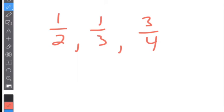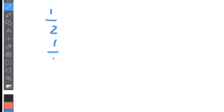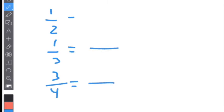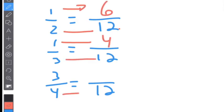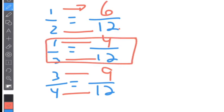So one half, one third, and three fourths — I like to write them vertical like this. We said the denominator is going to be 12. Remember, whatever you do to the denominator, you must do to the numerator. So times six, times six; times four, times four; times three, times three. All you need to do now is order them by the numerators. The smallest is going to be one third, the middle one is one half, and three fourths is obviously the biggest.